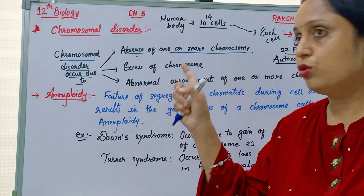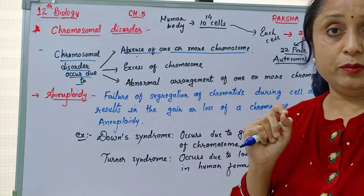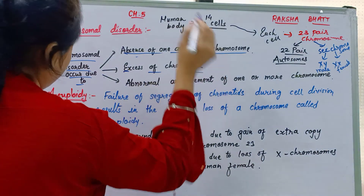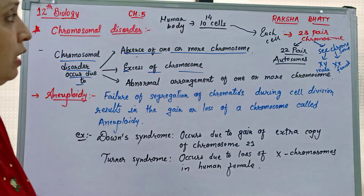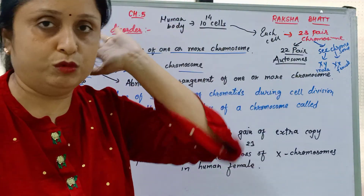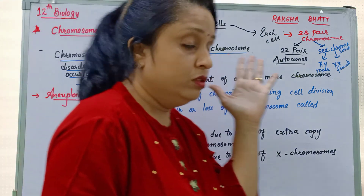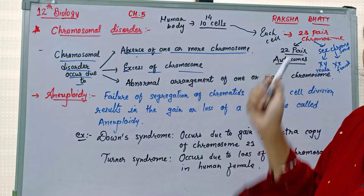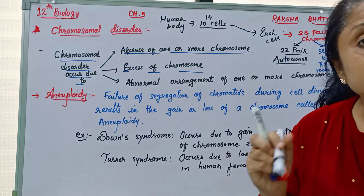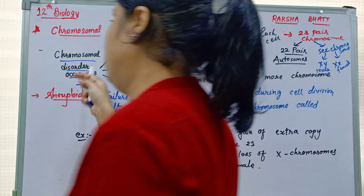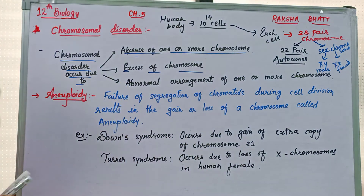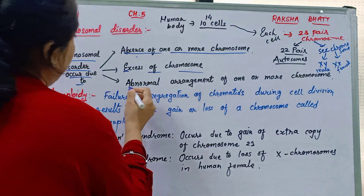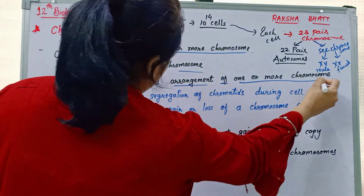If a chromosome has some problem, that means there is a chromosomal disorder. Second cause: excess of chromosomes — normally each cell has 46 chromosomes, but sometimes there are 47 or 48. Third cause: chromosomal disorder can also occur due to abnormal arrangement of one or more chromosomes.